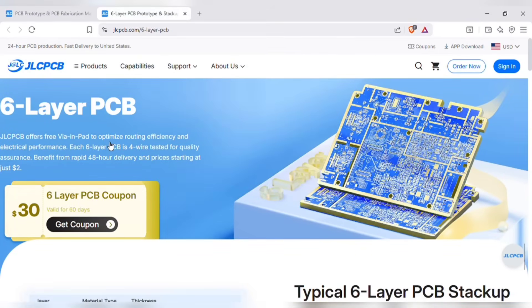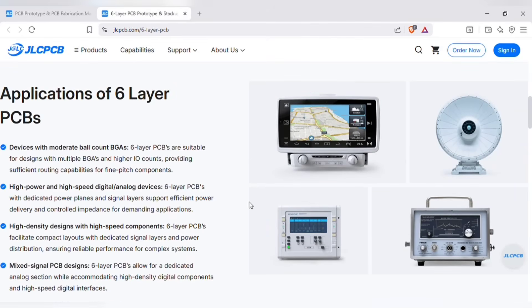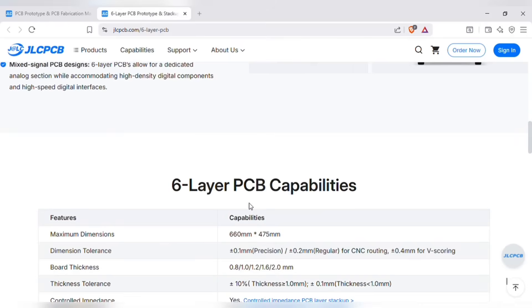JLCPCB offers the 6-layer PCB in affordable prices and with attractive cost-effective discounts. A 6-layer PCB has additional 2 layers compared to the standard 4-layer PCB. The stacking technique reduces the electromagnetic interference, and improves the performances of the electronics.